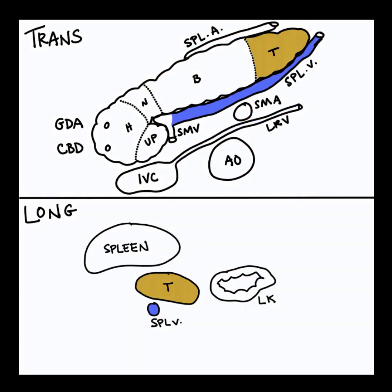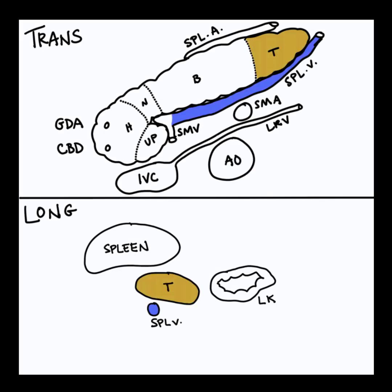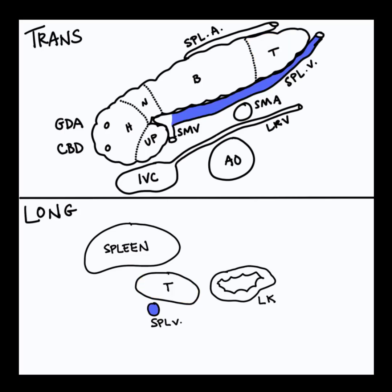The tail is the most often obscured section due to the stomach sitting anterior to it. The tail also dives deep into the body, making it trickier to see. Identify the splenic vein in grayscale or with color — this will show you the posterior border of the tail and help you locate the borders of the pancreas tail.